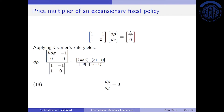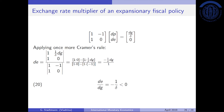Next, we compute the exchange rate multiplier. The exchange rate is on the second position of the vector of unknowns, so we insert the solution vector into the second column of the coefficient matrix. We compute the determinant of the modified matrix divided by the determinant of the unchanged matrix: 1×0 minus 1×(1/delta·dg) in the numerator, and 1×0 minus 1×(−1) in the denominator. This gives (1/delta·dg) in the numerator and positive one in the denominator. Dividing by dg yields de/dg = −1/delta.